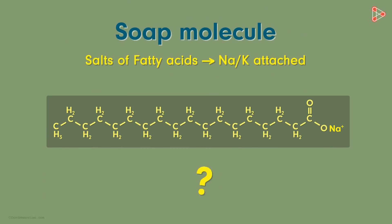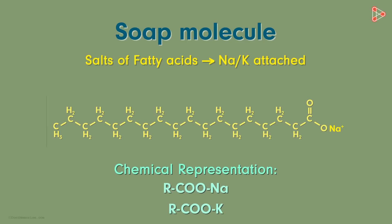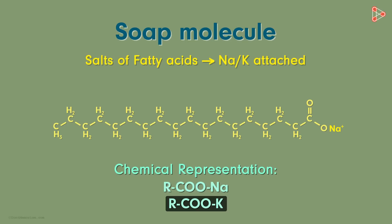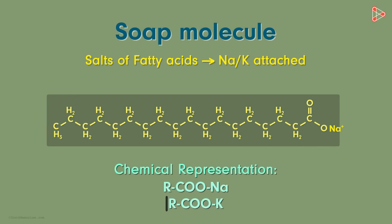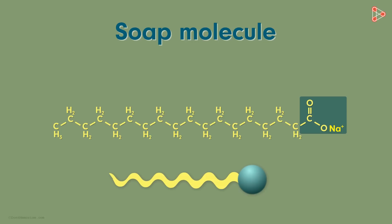How can they be represented though? Chemically, soaps are represented as R-COONa or R-COOK, depending upon whether it has sodium or potassium attached to it. Now it's obvious that these huge structures cannot be written precisely every time. That is the reason why we represent soap molecules using this structure.